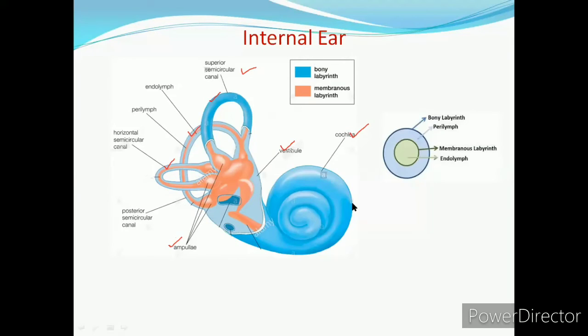Then the next part is the vestibule. Vestibule, it is a sac-like structure or bag-like structure. The upper portion is called as the utriculus. While the lower narrow portion is called as the sacculus.